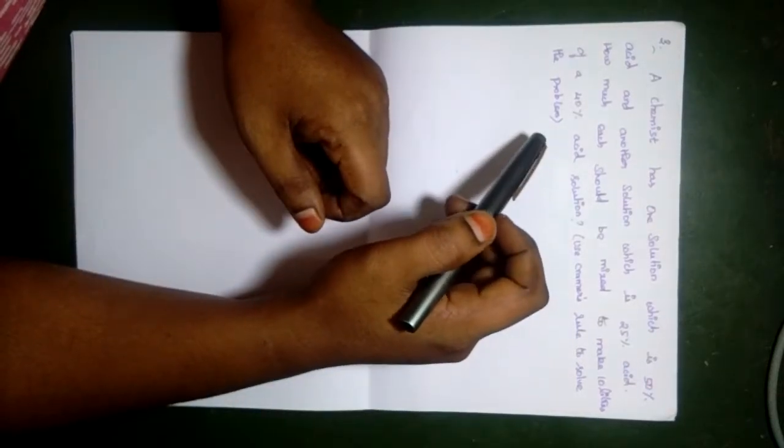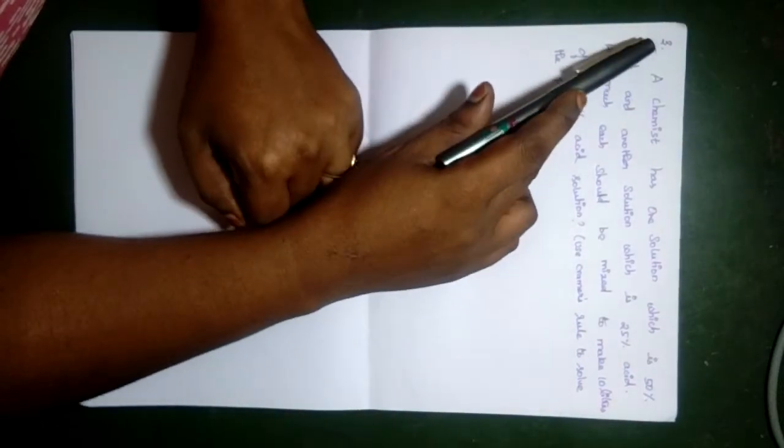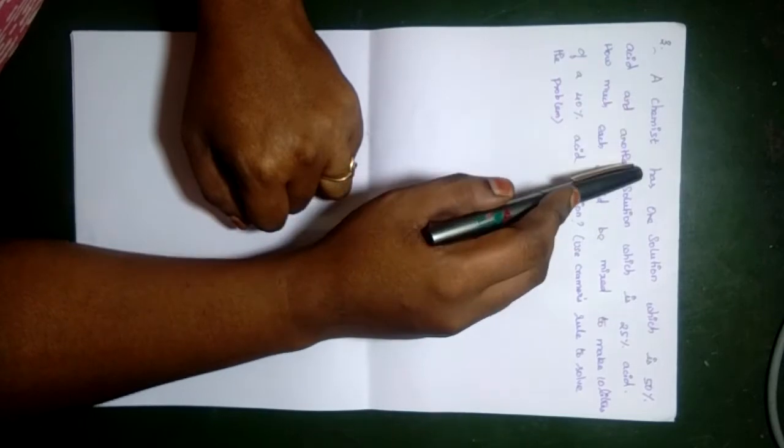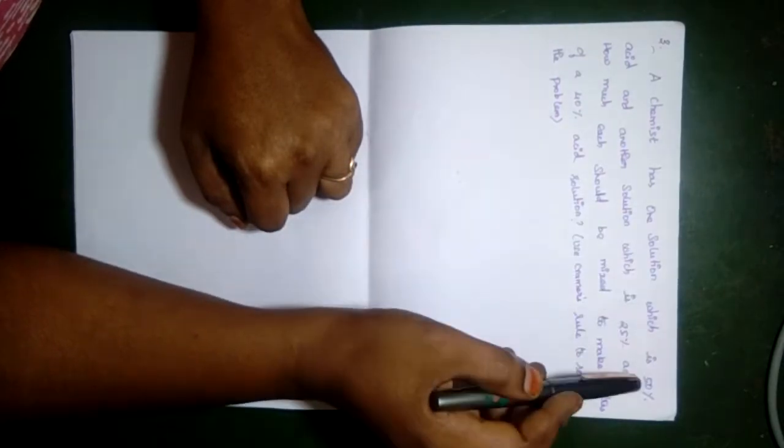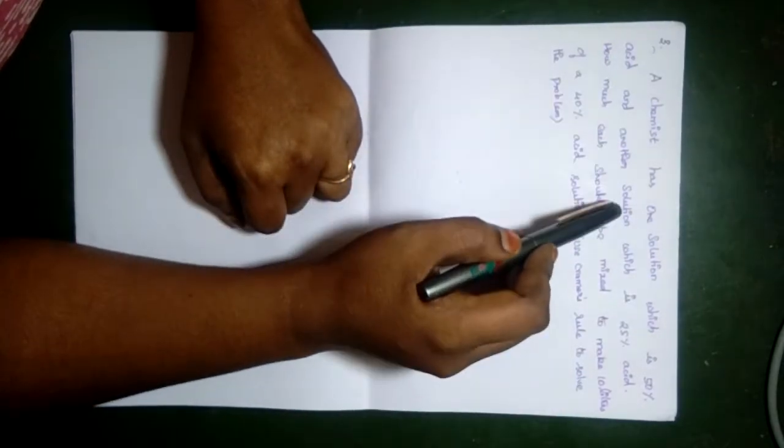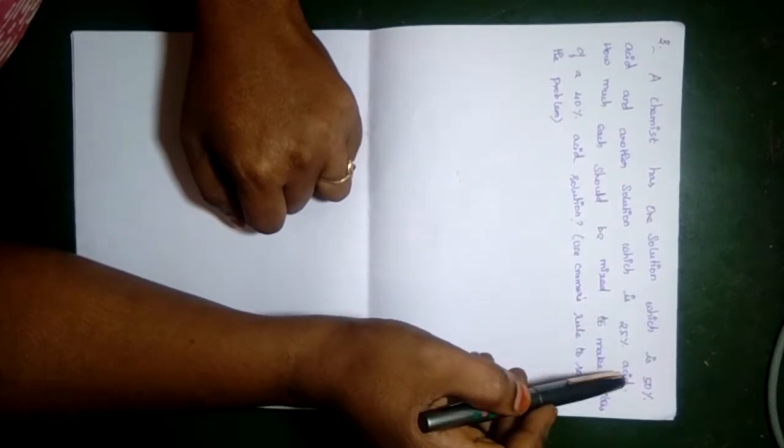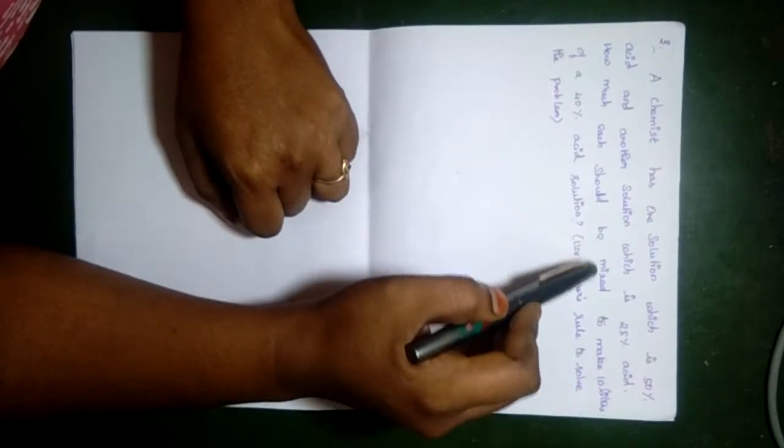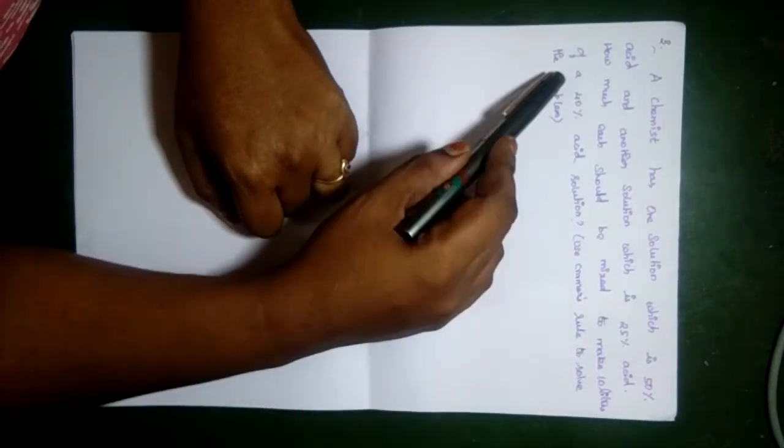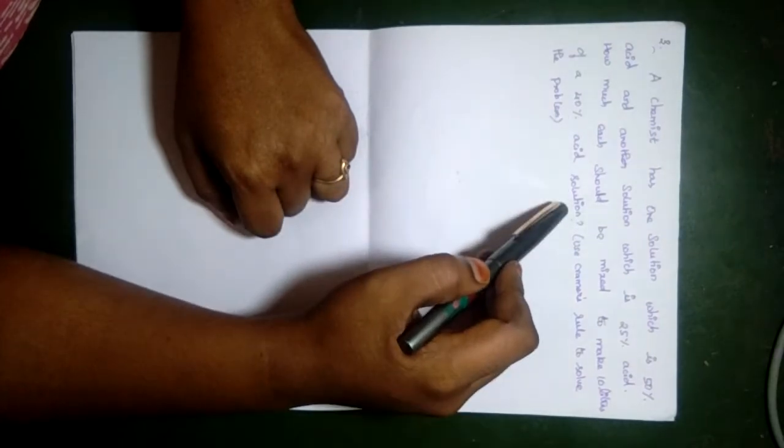Hi students, now our exercise is 1.4. A chemist has one solution which is 50% acid and another solution which is 25% acid. How much of each should be mixed to make 10 liters of 40% acid solution?